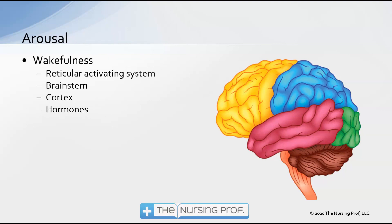The next level down is arousal — we're looking for wakefulness here. This is assessing the reticular activating system, looking at lower portions of the brain including the brainstem, the cortex, and hormonal control such as cortisol, which controls the patient's wakefulness.